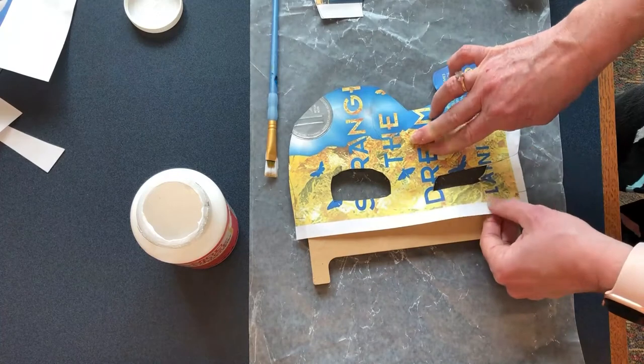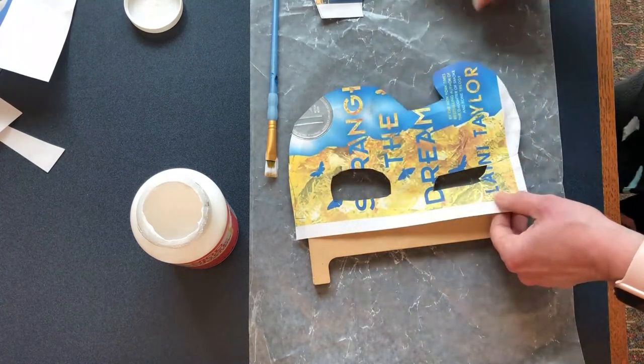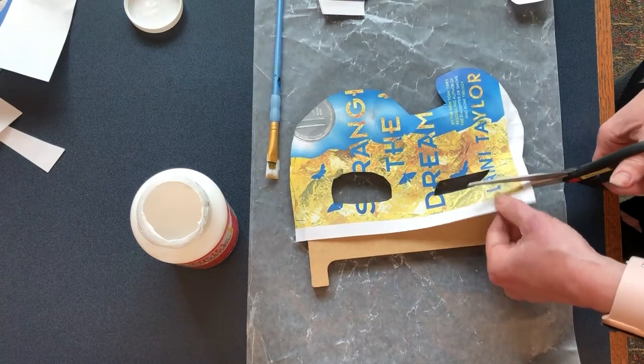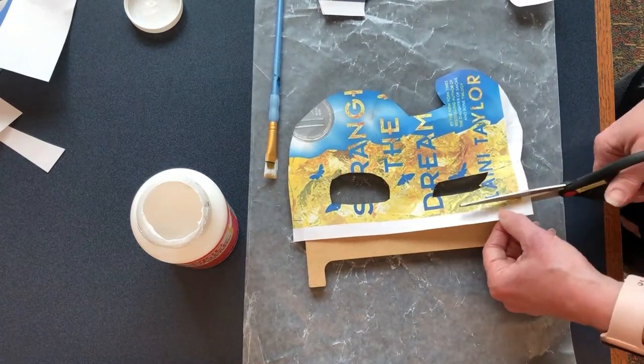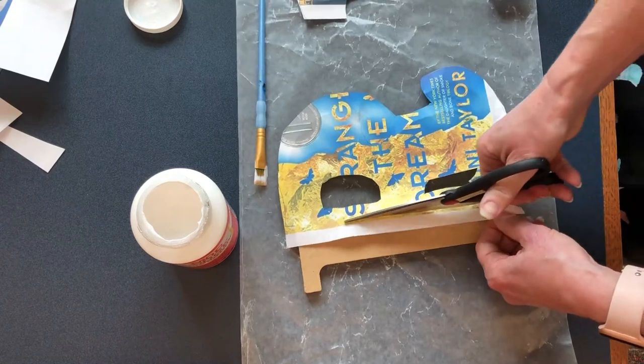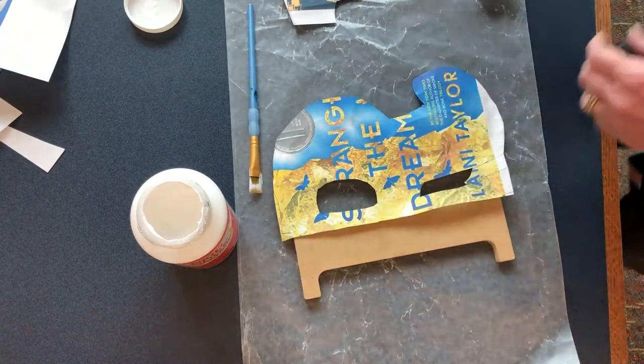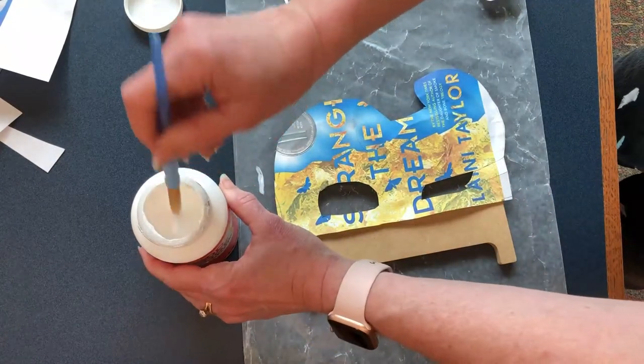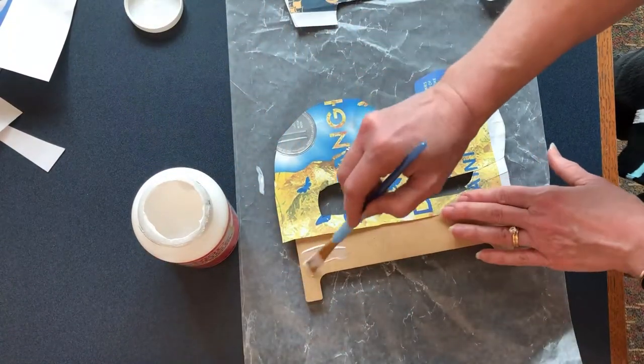Then what you're going to do is cut this section here and put this on top, since you don't need this. I'm going to glue this other section now, and I'll just glue over the remaining paper.